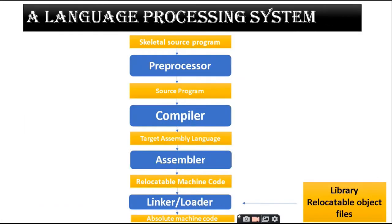The language processing system starts with a scatterator source program, then goes to a preprocessor to produce a preprocessed source program. Then during compilation, it generates assembly language. After the assembler, it generates machine code — that is relocatable machine code. After linking and loading with library relocatable object files, it generates absolute machine code.